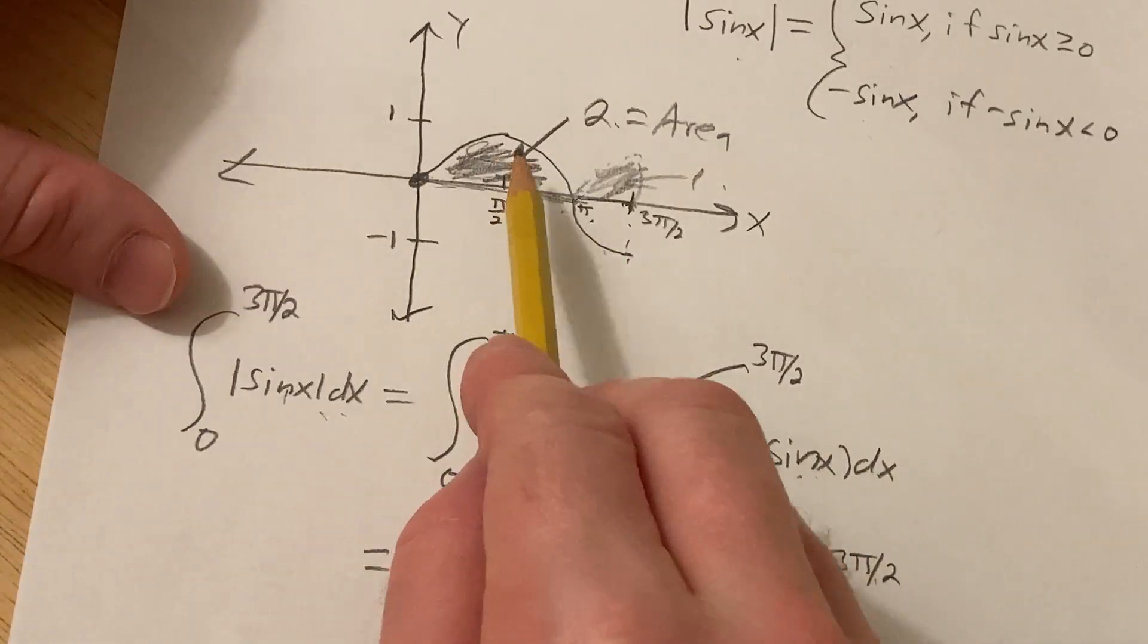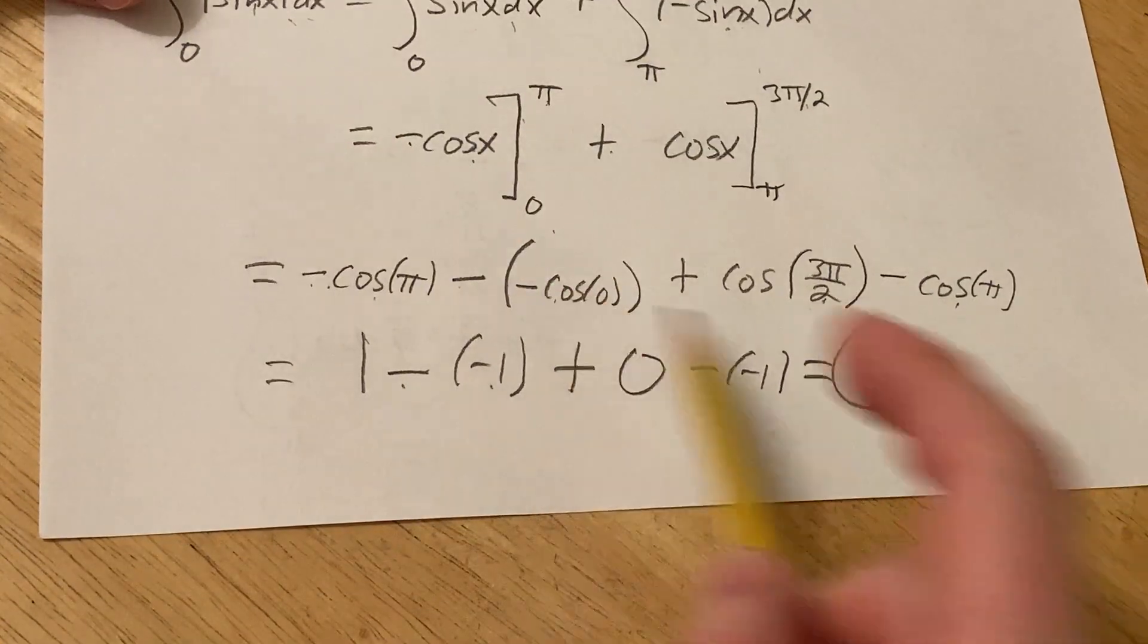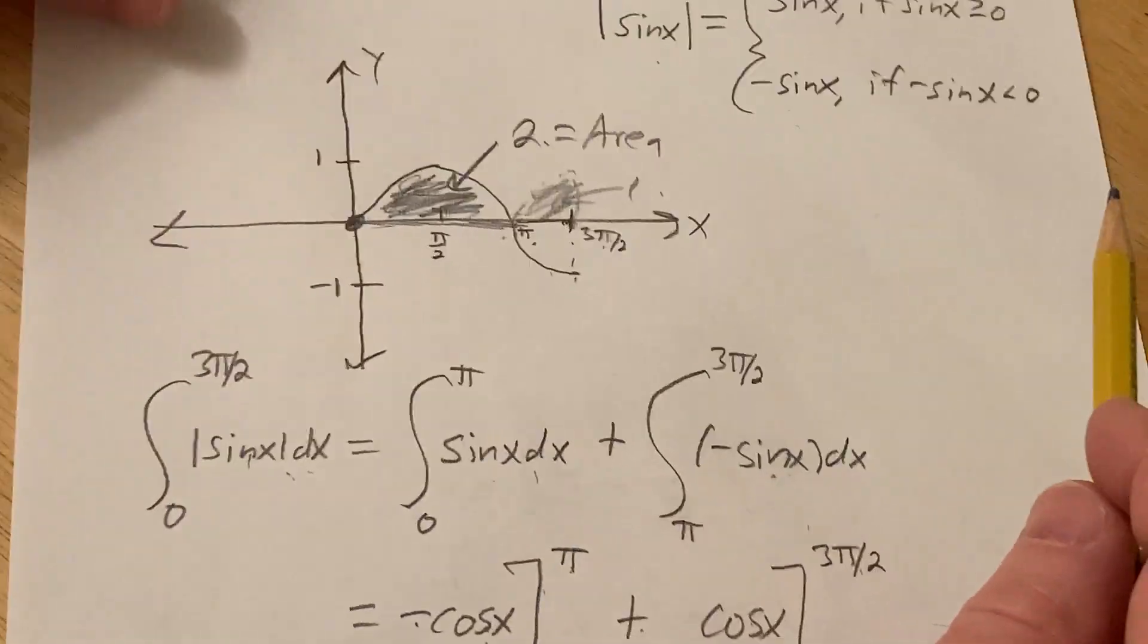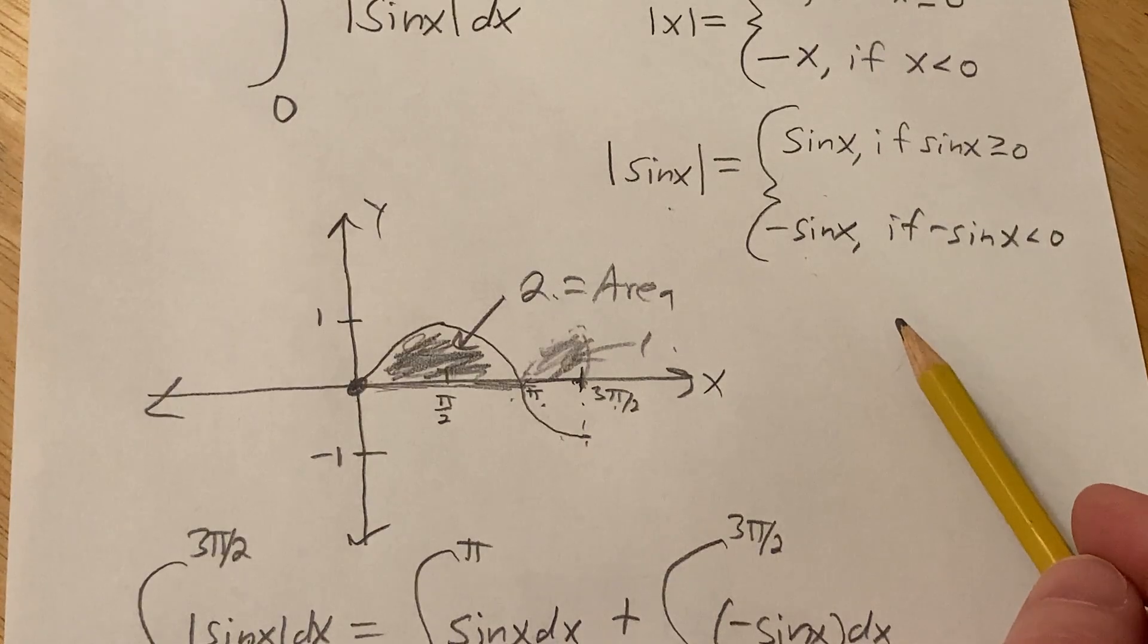I've done problems like this before. So I kind of already knew it was going to be 3 just from memory. But it's good to verify. So nice problem. Whenever you have an absolute value, you just apply this definition and then draw a picture. And then you can get rid of it. Good luck.